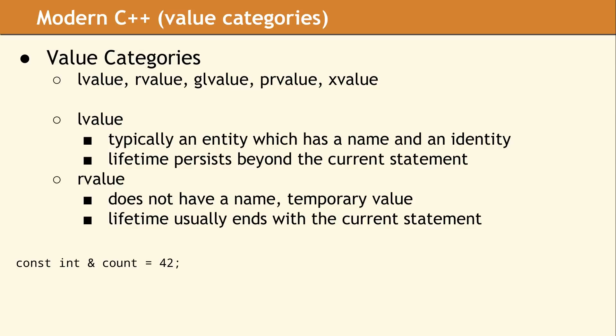In this example expression, the data type for the variable count is const-referenced to an int. The value category is L-value, since count has a name. The value of 42 has a data type of int and a value category of R-value. This expression will assign 42 to count, thereby extending the lifetime of the R-value beyond the end of this expression.